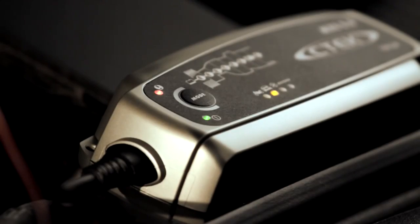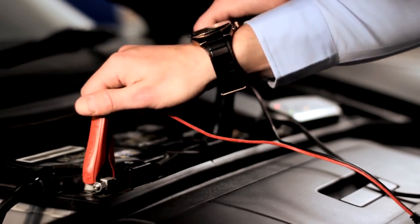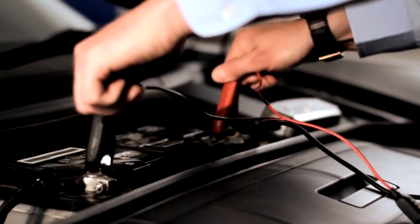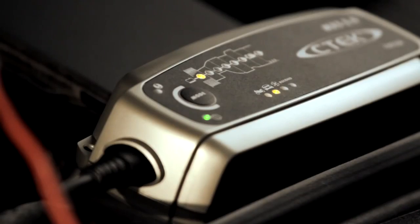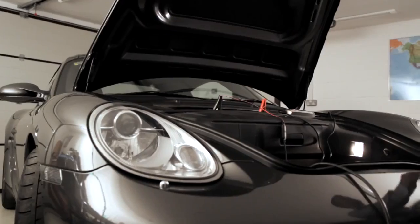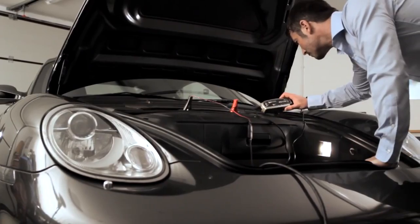A smart warning light lets you know if anything is connected incorrectly. The CTEK charger is small enough to fit under the bonnet and is even safe to use in wet weather.